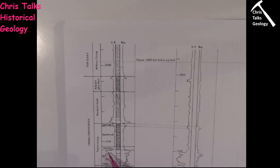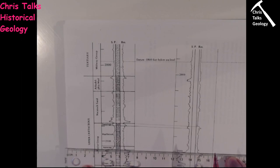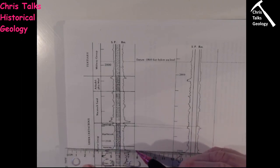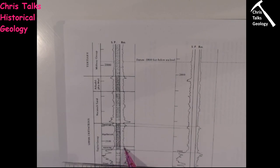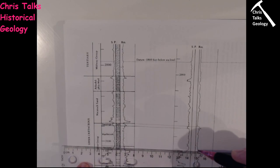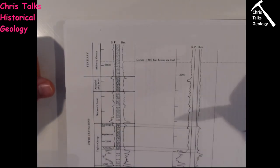We can also see the Anona Formation: there's a big kick out and then it steps back in at the top. Looking at the other column, we have a big step out that comes back in — that's the base of the Anona. For the top, just before it there's a tiny little kick, and that same tiny kick appears on the other side. Just above that tiny kick is where the upper contact is going to be. So we're identifying these little geophysical indications to locate formation boundaries.